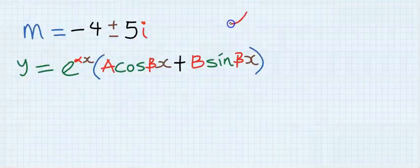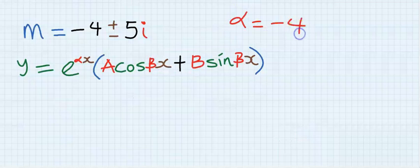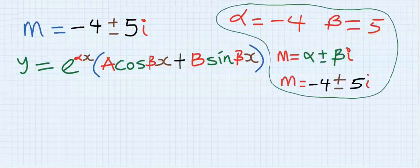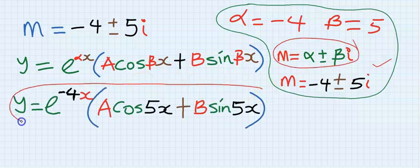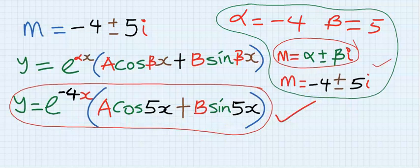Since my alpha is equal to minus 4, and my beta is 5. Always use this to help you to compare. Finally, substitute for your alpha and for your beta, and this becomes your final result, and the general solution to the differential equation.